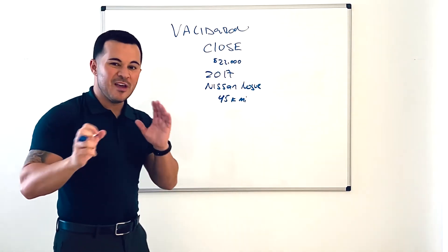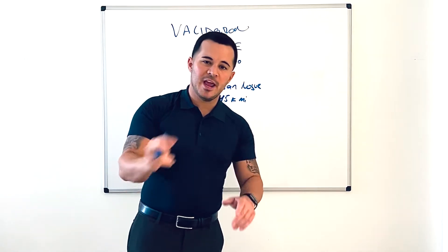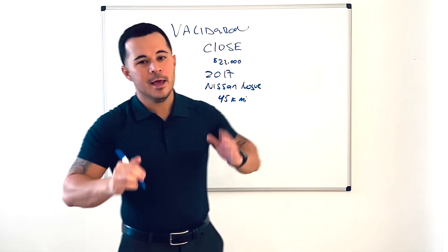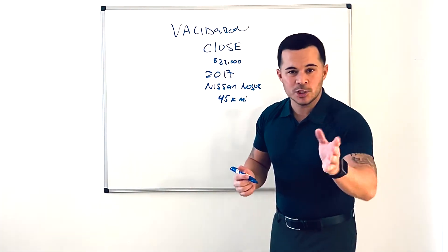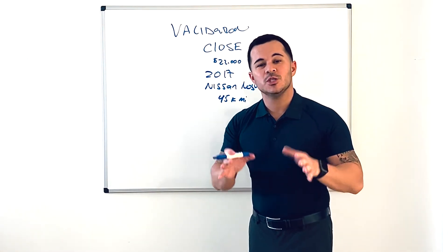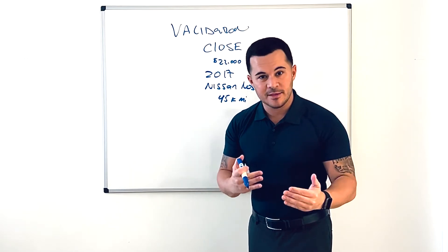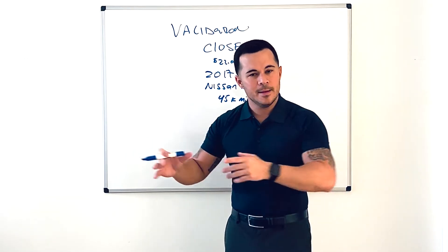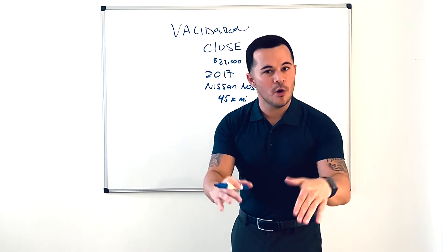Alright, so we have a '17 Rogue, $22,000, 45k on the clock. Customer says to you, "So what's the best you can do for me on the Rogue?" I typically would like to do this while sitting down and negotiating the deal, not so much on the lot.